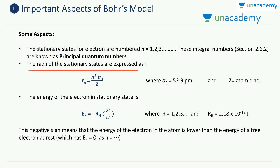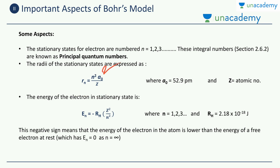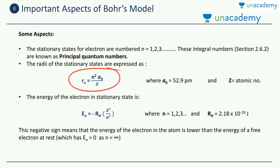The second aspect is the equation for the radii of stationary states, which is very important to remember. The radius rn is given by: rn = (n² · a₀) / Z, where n is the orbit number (1, 2, 3, …), a₀ is a constant equal to 52.9 picometers, and Z is the atomic number. This expression gives the radius at which the electron is moving.